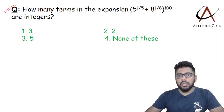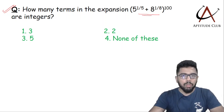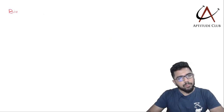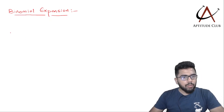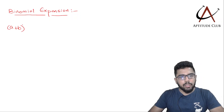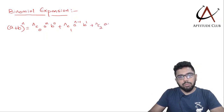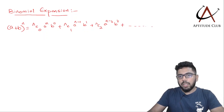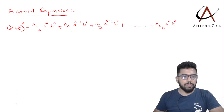Let us begin. The first thing we need to know is binomial expansion. When we write (a + b)^n, this is expanded as: nC0 · a^n · b^0 + nC1 · a^(n−1) · b^1 + nC2 · a^(n−2) · b^2, and this continues till nCn · a^0 · b^n. This is the expansion.